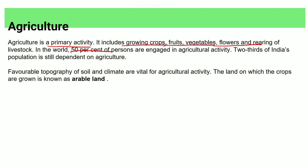50% of people in India are engaged in agricultural activity and two-thirds of Indians are still depending on agriculture. Arable land is the land on which crops are grown. India's climate, topography, and soil are suitable for agriculture.